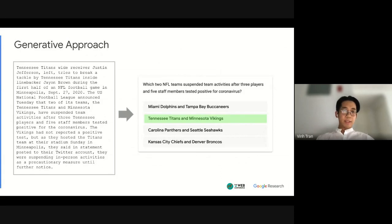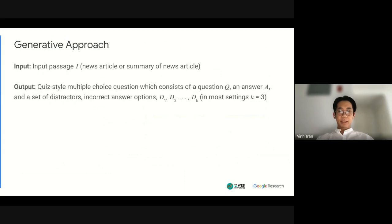At a high level we adopt a generative approach to this problem where we take in an input sequence which is a news article or a summary of news article and we generate the multiple choice quiz from that article. And in particular we generate a quiz style multiple choice question which consists of a question and answer and a set of distractors which are also known as incorrect answer options for the question and answer. And we divide this particular problem up into two major components which we'll talk in more detail in the next session called question answer generation and distractor generation.